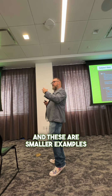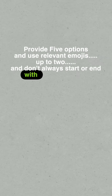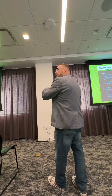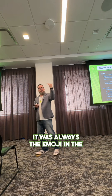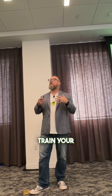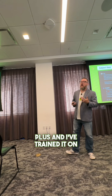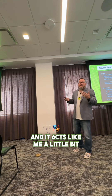These are smaller examples, but I'm going to get better instructions. Provide five options and use relevant emojis up to two, and don't always start or end with an emoji, or use the same emoji more than twice in the subject line — because when I didn't give those instructions, it was always an emoji at the beginning or irrelevant emojis. Train your ChatGPT models and I encourage you to pay for it. I use ChatGPT Plus and I've trained it on my writing and it acts like me a little bit.